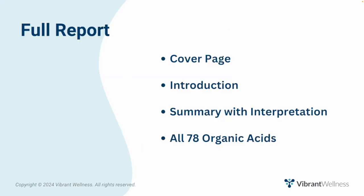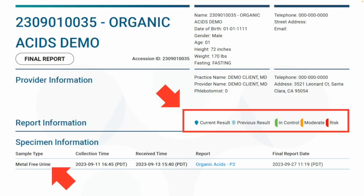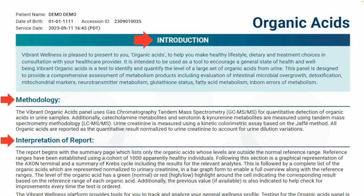Let's start with a quick overview. The organic acids sample report includes a cover page, introduction, summary with interpretive comments, then lists all 78 organic acids. The cover page lists the sample type and the result interpretation key. The introduction pages include the methodology and interpretation of report, and I highly recommend reading this page.